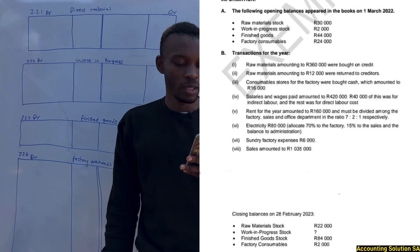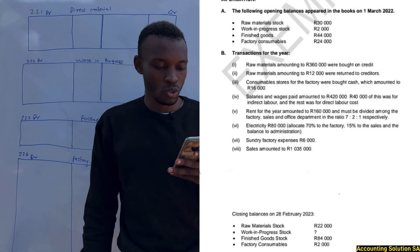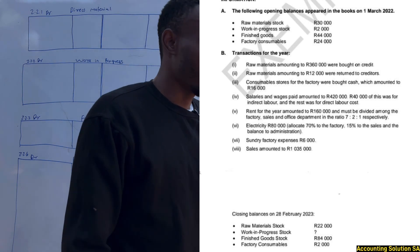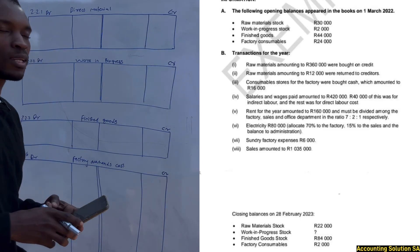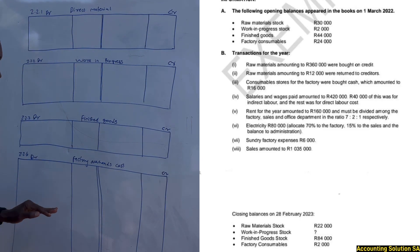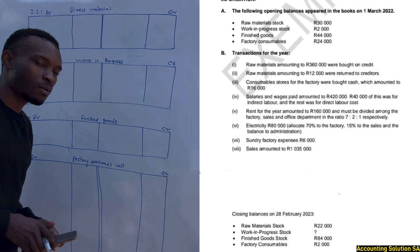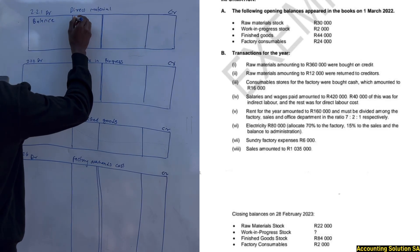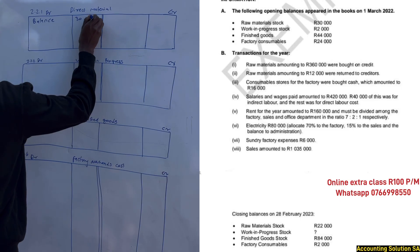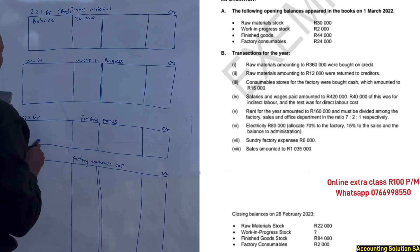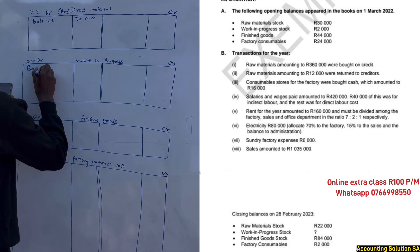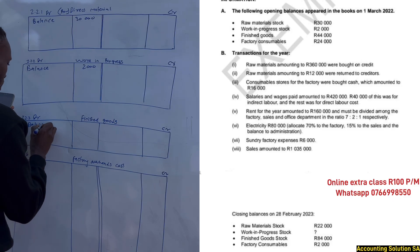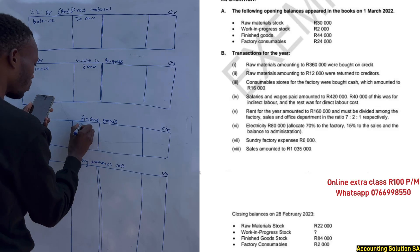The following opening balances appear in the books on 1 March 2022. Every time we prepare a ledger account for manufacturing, opening balances are recorded on the debit side only. Factory overheads does not have an opening balance; the rest do. The opening balance for direct material (same as raw material) is 30,000. Work in progress opening balance is 2,000, and finished goods opening balance is 44,000.